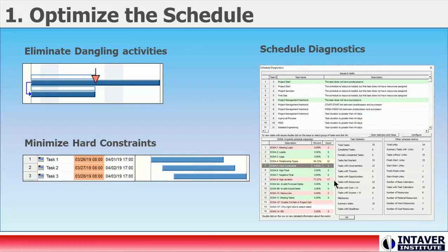Step 1: Optimize the Schedule. Monte Carlo simulation requires that you run hundreds of varying models of your schedule, which means your schedule must update automatically whenever dates or durations change due to risk. If your schedule is not optimized so that it updates automatically, the results of the simulation will often be overly optimistic and thus invalid.